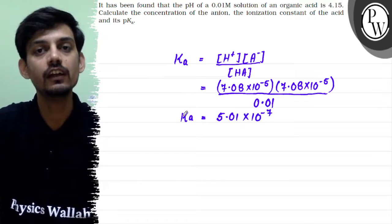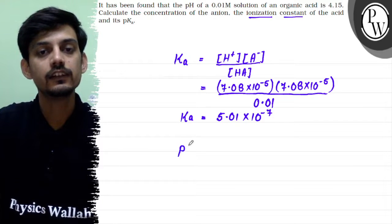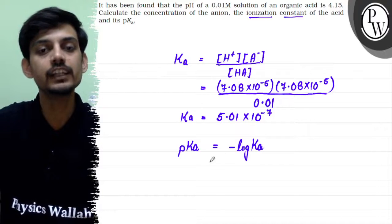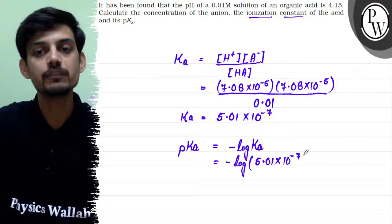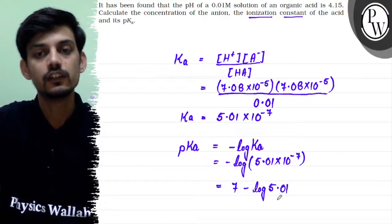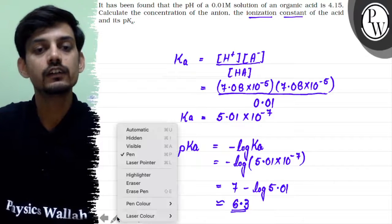This is the value of Ka or ionization constant of the acid, and pKa, similar to pH, can be defined as minus log of Ka. This will become minus log of 5.01 multiplied by 10 to the power minus 7, which gives us 7 minus log 5.01. This will be approximately 6.3. This is the value of pKa of the solution.